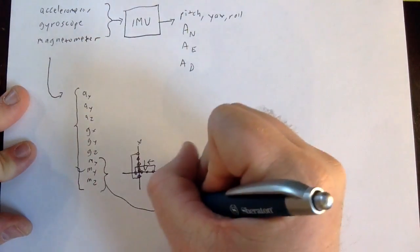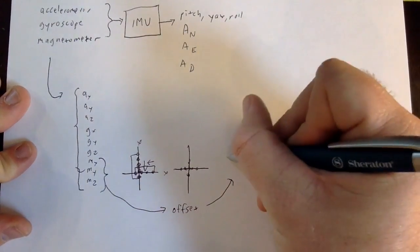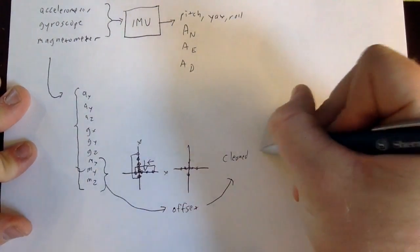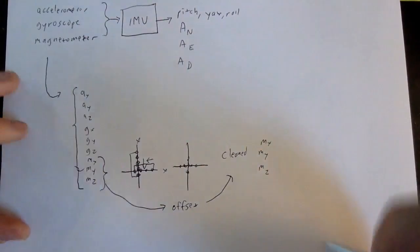So basically you just need to take the median X, Y, and Z value over a period of time where you've calibrated, and then apply some offset to get calibrated values. So essentially if we take these now, apply some offset, then we'll get cleaned M_X, M_Y, and M_Z. Okay, so that is the first step.